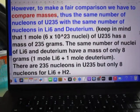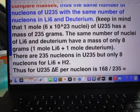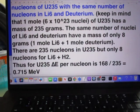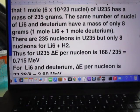However, to make a fair comparison, you have to compare masses. Thus the same number of nucleons of uranium-235 you have to compare with the same number of nucleons in lithium-6 and deuterium. The same number of nuclei in lithium-6 and deuterium have a mass of only 8 grams. One mole uranium-235, 235 grams.